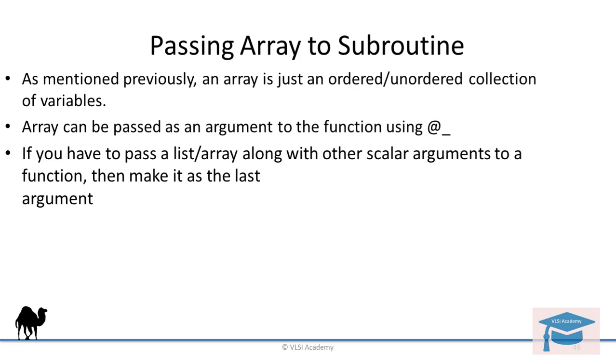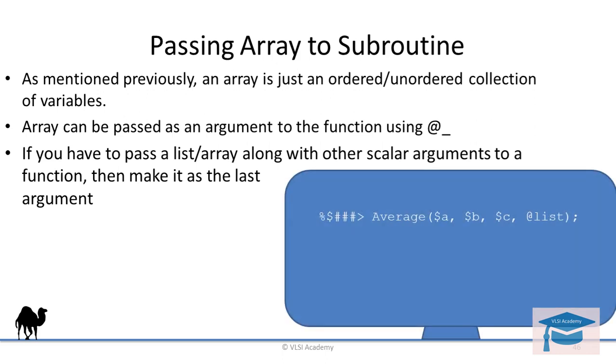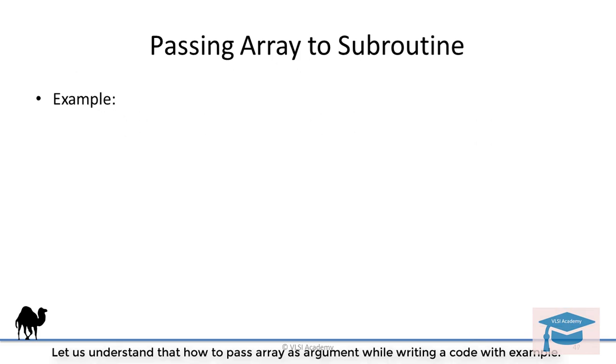Here is a small statement for understanding how to pass an array as argument while calling the function. You can clearly see that there are three scalars before we call the list. So the list should be the last argument when calling the function. Let us understand how to pass an array as an argument while writing code with this example.